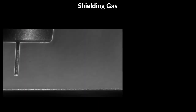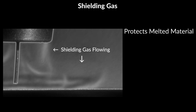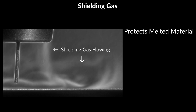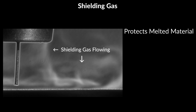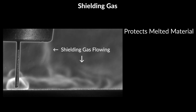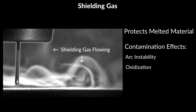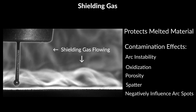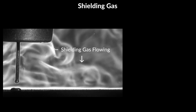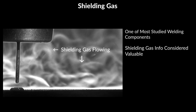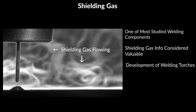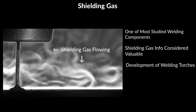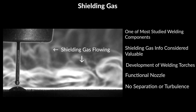5. Shielding Gas. Shielding gas is a gas mixture that flows from the welding gun or torch continuously during welding. It protects the melted material from oxidization to ensure the strength of the joint. An uninterrupted, optimal flow of the gas ensures the weld does not come into contact with contaminants in the air. Contamination may lead to arc instability, oxidization, porosity, and spatter. Furthermore, the plasma and arc spots can be influenced negatively by contact with oxygen or other atmospheric gases. Shielding gas is one of the most studied components of welding, and information on the flow and functionality of shielding gases is valuable — for example, in the development of new welding guns and torches. The most important feature in terms of shielding gas is a functional nozzle that lets the gas flow without separation or turbulence.